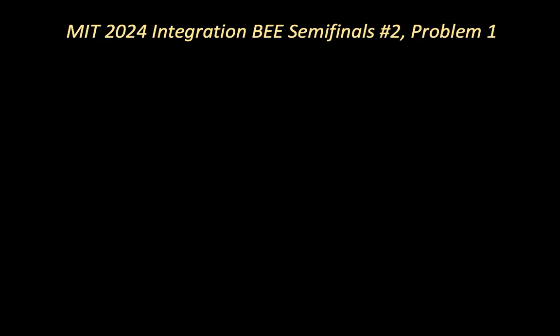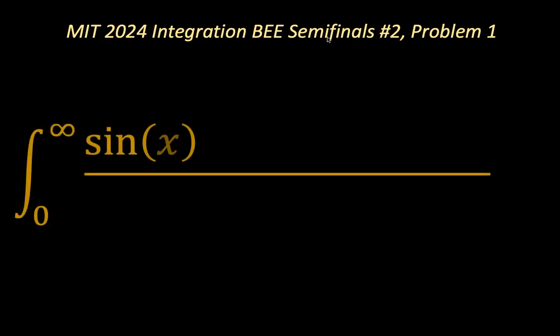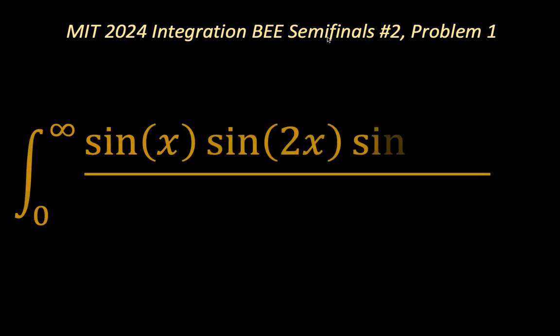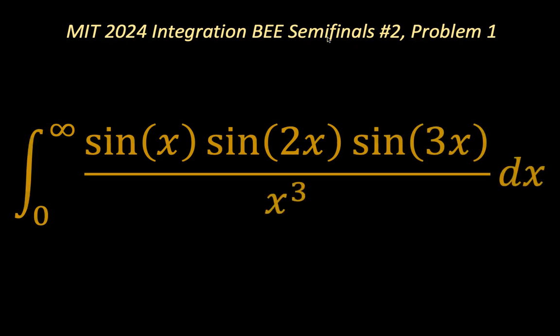Welcome to this session of Everyday Mathematics. Today's problem comes from the MIT 2024 integration semi-finals, number two, and problem number one is the problem of focus today: the definite integral from x equals zero to infinity of sin(x) times sin(2x) times sin(3x) over x to the power 3.